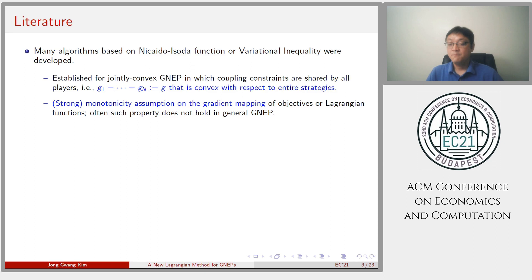Let's look at the literature. Many algorithms based on the variational inequality or Nikaido-Isoda function were developed. However, they are established for jointly convex GNEP, in which coupling constraints are shared by all players. That is, G_i equals G_N. And it is convex with respect to the entire strategy, and or for the affine coupling constraints. Furthermore, they rely on strong monotonicity assumption on the gradient mapping of objective or Lagrangian function. Often such property does not hold in general GNEP. So, those approaches cannot be applied to general GNEP.